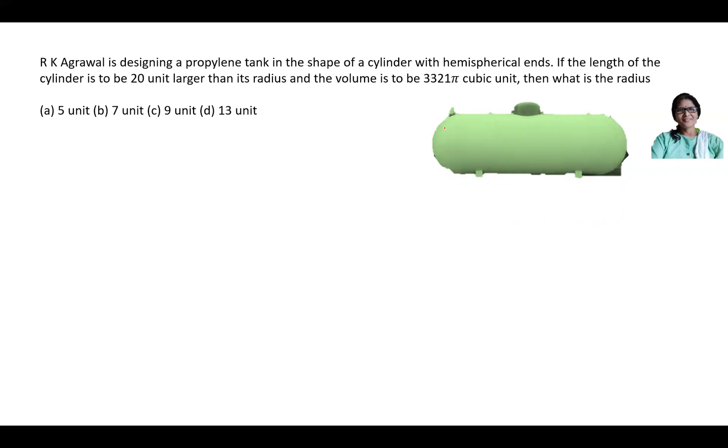This question is about a container which has a cylindrical part and there are two hemispheres on two sides. The height of the cylinder or length of the cylinder is equal to radius plus 20. And you know the radius of the hemisphere here is the same as your radius of the cylinder.